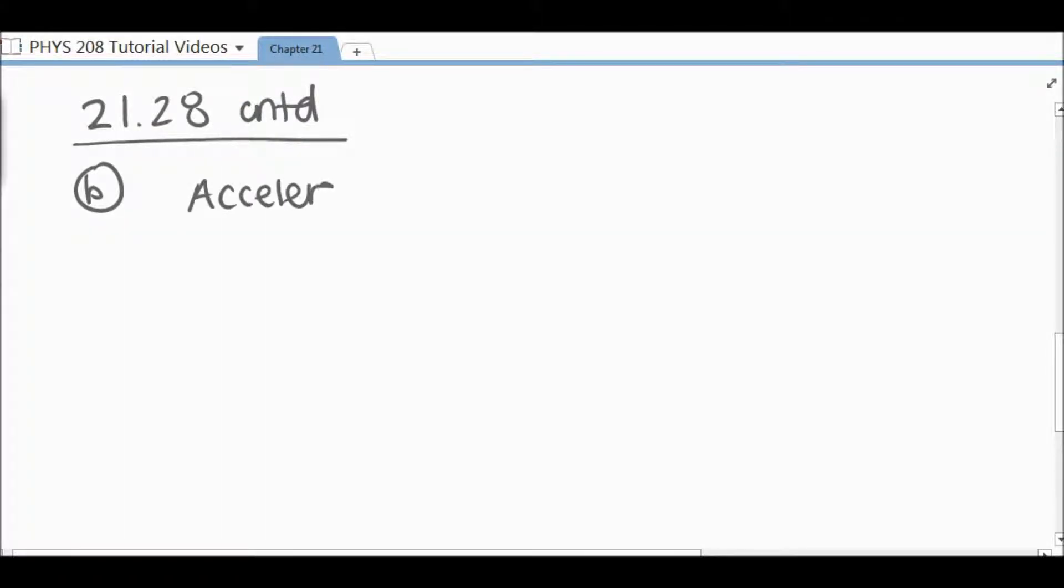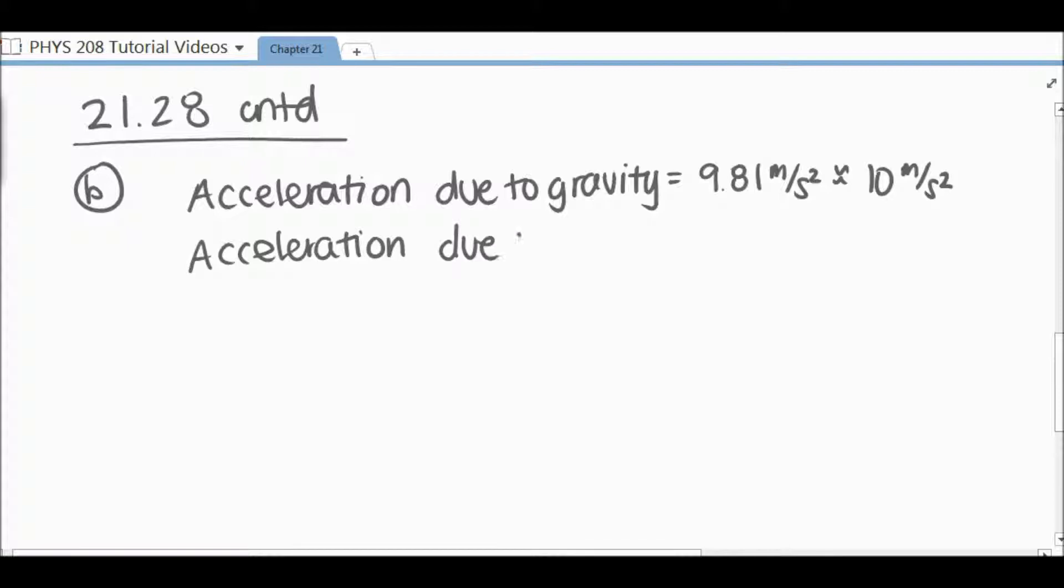In part b, we are asked, are we justified in ignoring the effects of gravity? Justify our answer quantitatively. So as you can see me writing out, the acceleration due to gravity, which we all know, is 9.81 meters per second squared, which is approximately 10. Just for simplification, we're going to say it's 10 for this case. And we just found that the acceleration in the y direction due to that uniform electric field was 1.00 times 10 to the 12 meters per second squared.